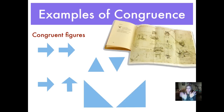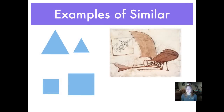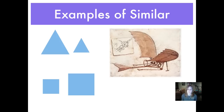Here are some examples of similar figures. The triangles on the top are the exact same shape — they're both triangles — but they are different sizes. So they are similar, but not congruent. The squares on the bottom are also the exact same shape, but they're not the same size. So they would be similar but not congruent.